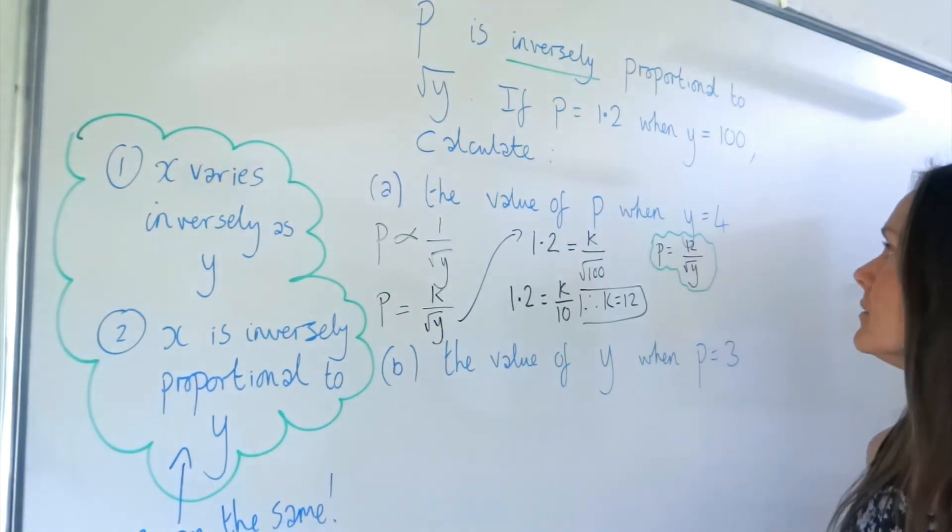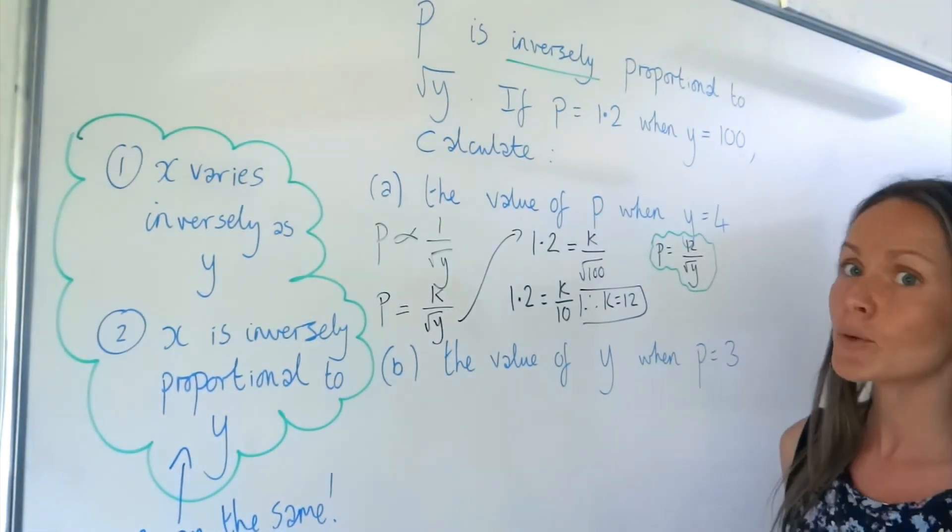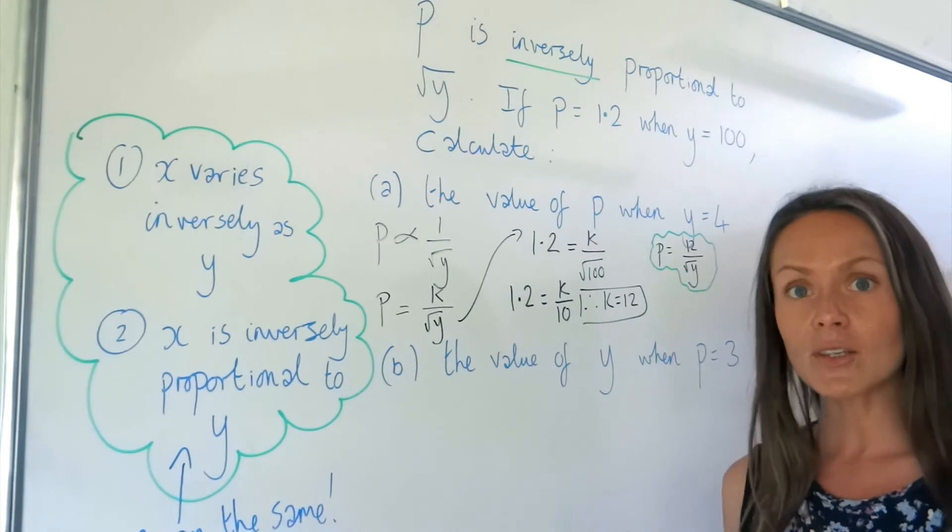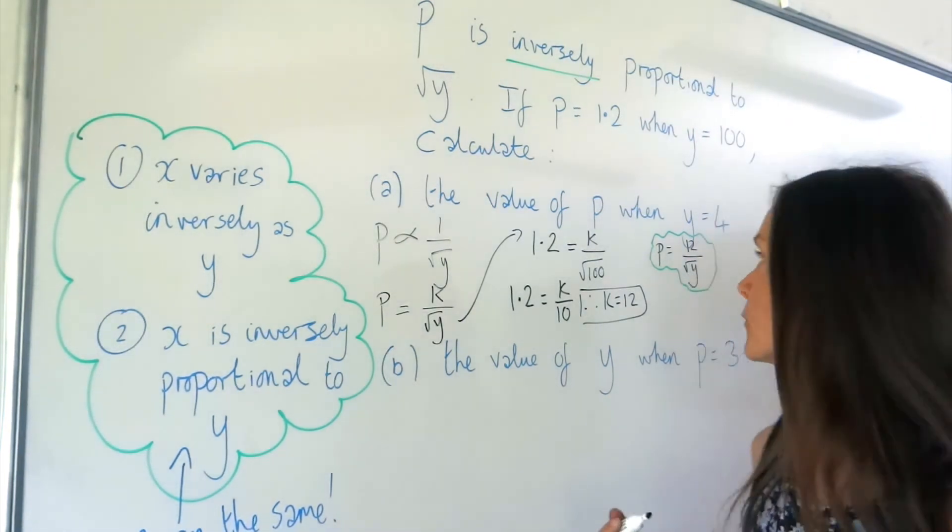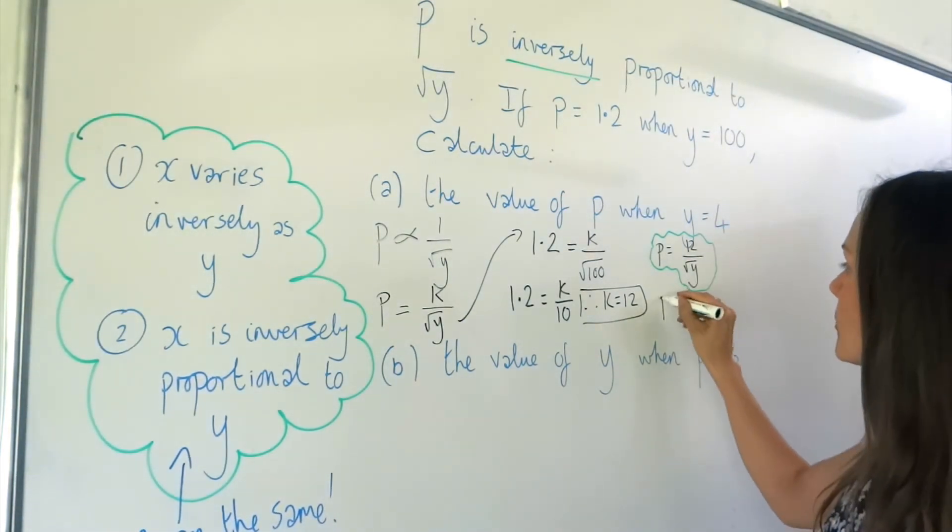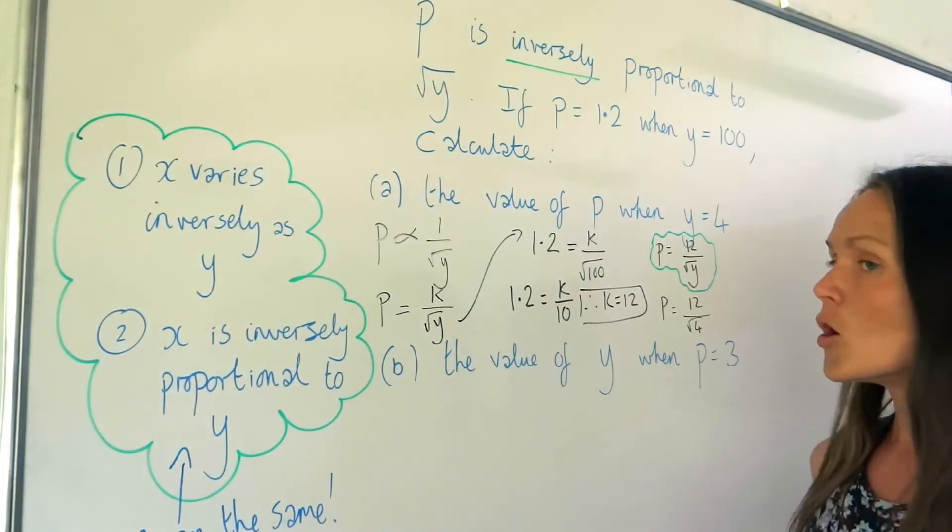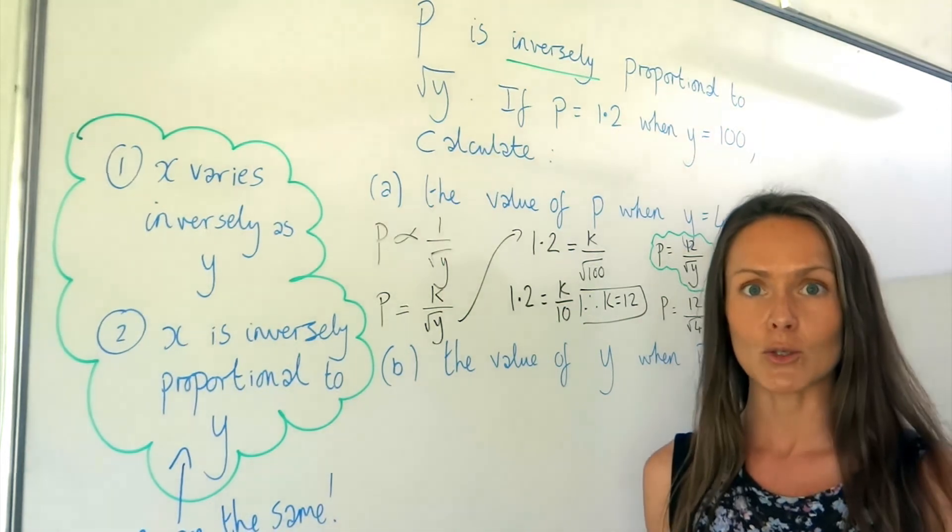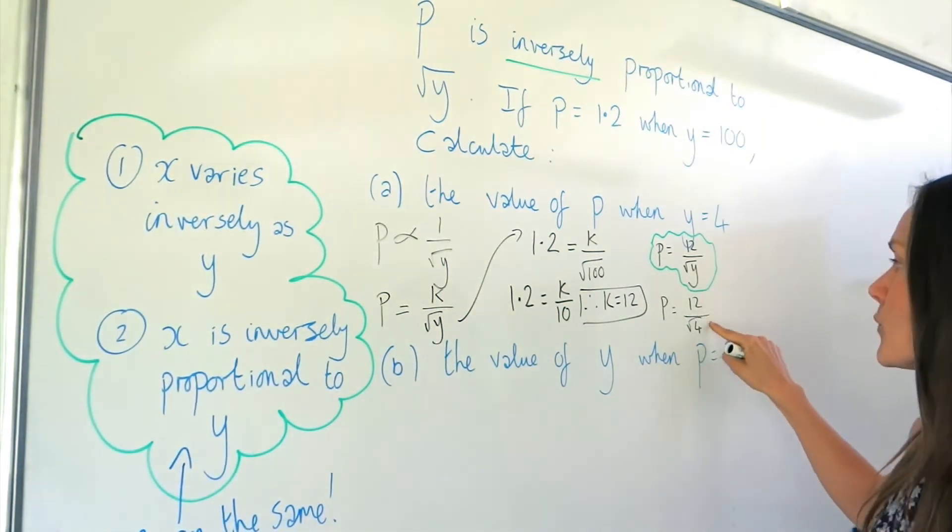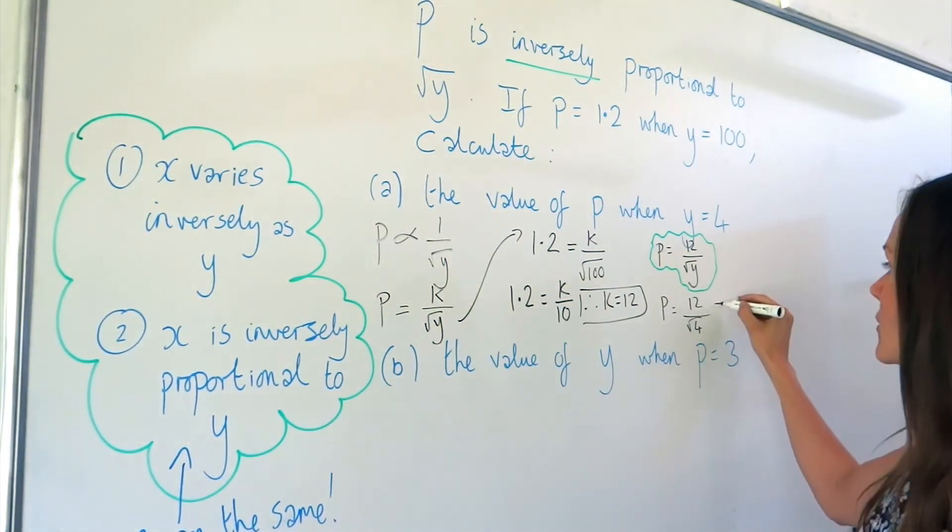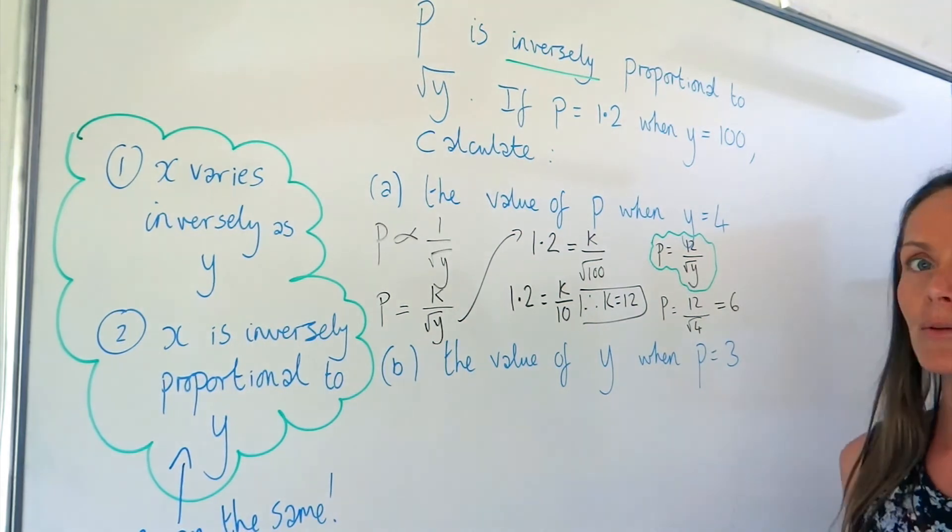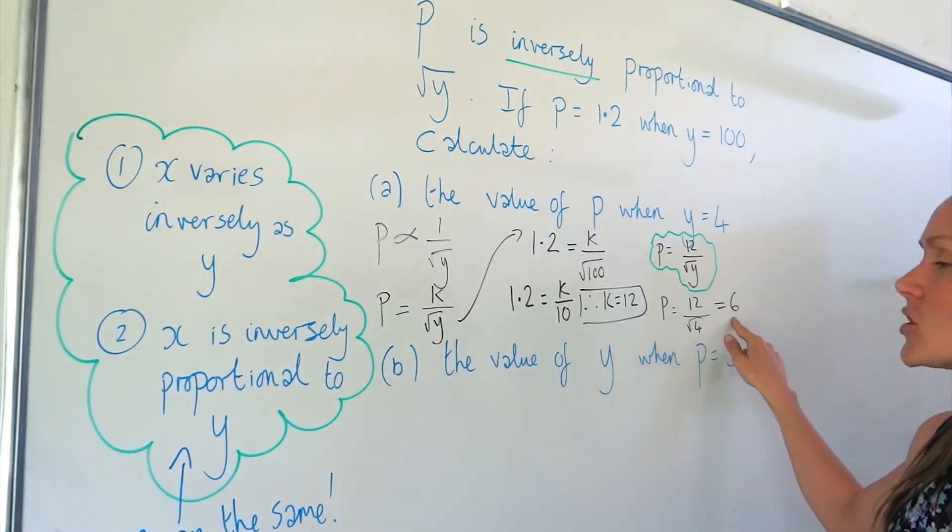So in part A, it tells us to find the value of P when Y is 4. So you need to change your value of Y to 4 over here. So P is equal to 12 over the square root of 4. Well, the square root of 4 is 2, and 12 divided by 2 is 6. So that's the answer in part A. We found the value of P, which is 6.